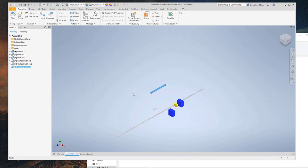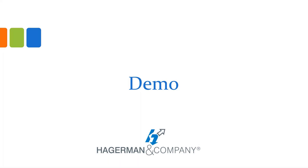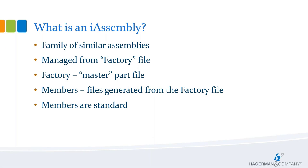I think that's all for iParts — let's jump over to iAssemblies. Like iParts, iAssemblies are very similar: instead of a family of similar parts, we're talking about a family of similar assemblies, still managed from the factory or master file, with members generated from the factory file. Unlike iParts, the members in an iAssembly are standard — they can only be driven from the table. You can add rows, but you can't create an iAssembly on the fly.